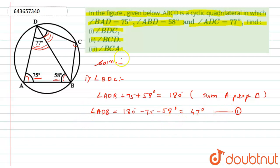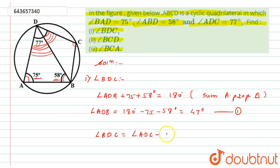We have found angle ADB, but we need angle BDC. So subtracting angle ADB from the complete angle ADC: angle BDC equals angle ADC minus angle ADB, which is 77 degrees minus 47 degrees, giving us 30 degrees. So the first answer is angle BDC equals 30 degrees.